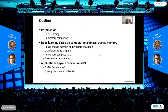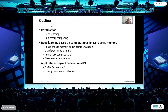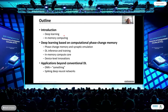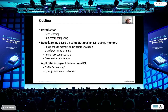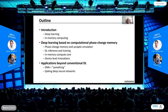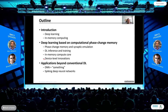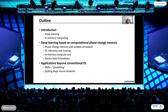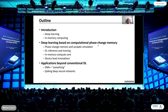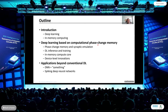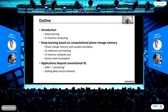This is how I would like to structure today's talk. There are three parts: the first is a brief introduction to deep learning and in-memory computing. The second part, the bulk of the work, discusses how we do deep learning based on computational phase change memory here in Zurich. The final part is more forward-looking, examining applications that go beyond conventional deep learning.